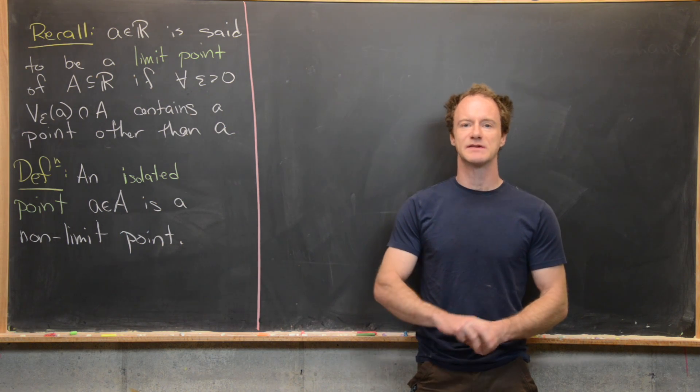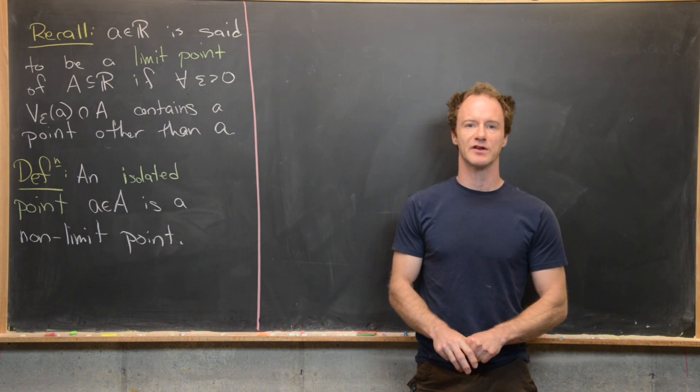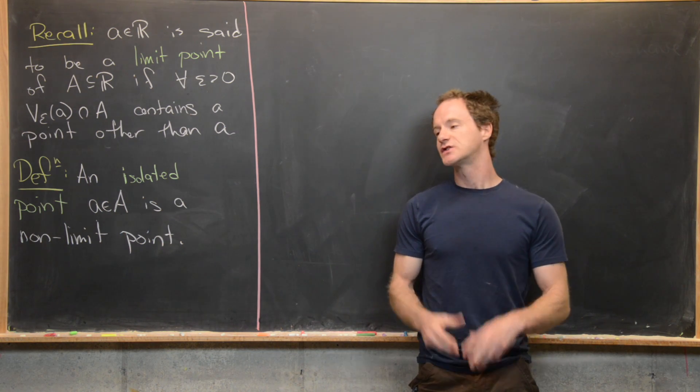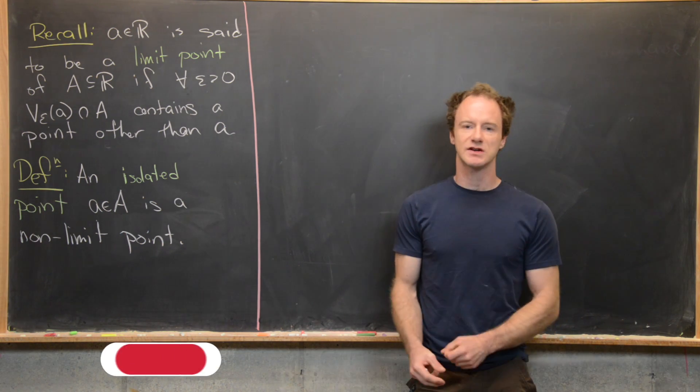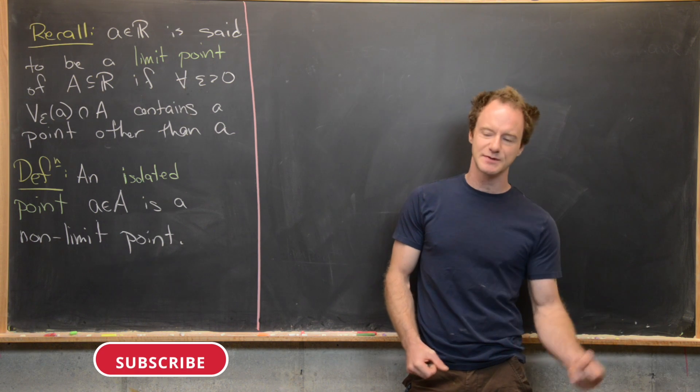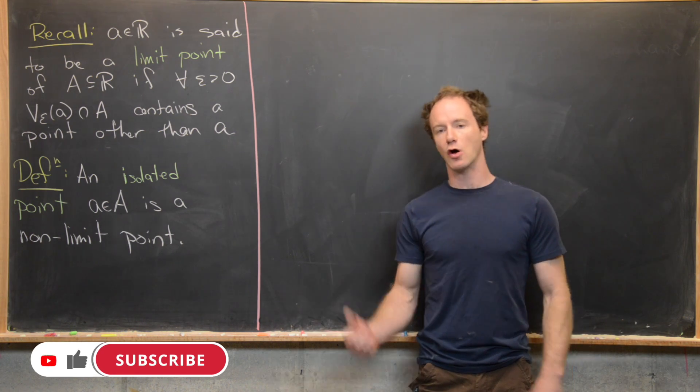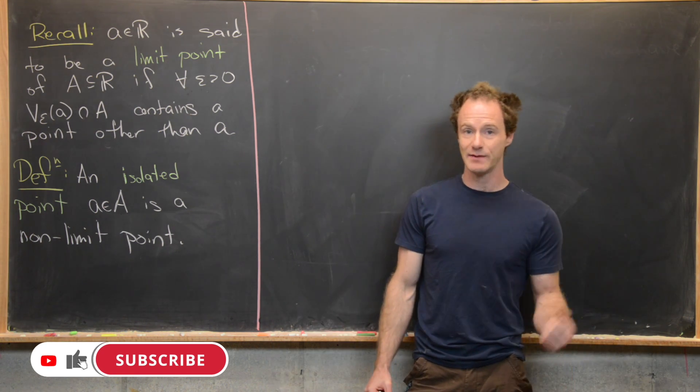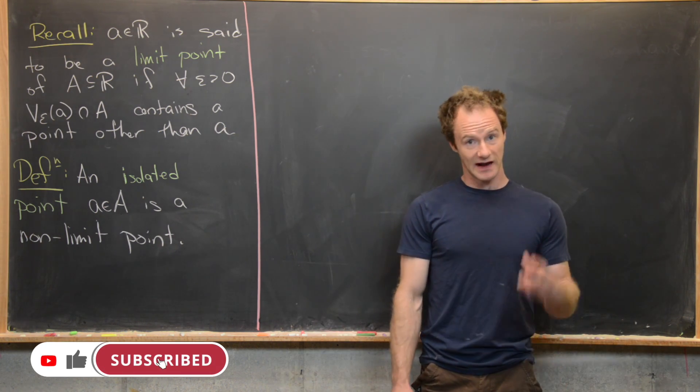We're continuing to look at the topology of the real number line. We recently looked at the notion of an epsilon neighborhood, an open set, and a limit point.